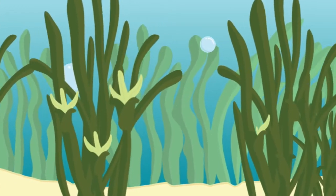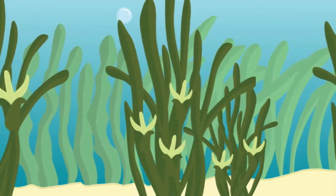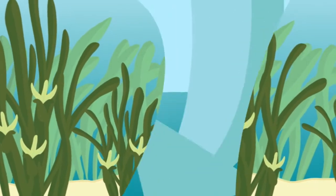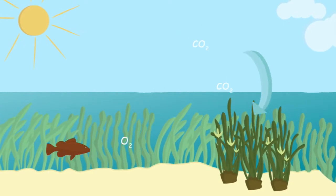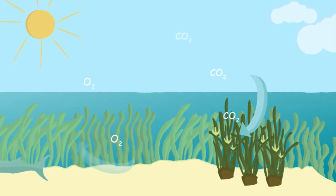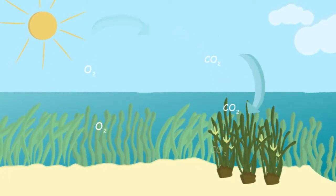Did you know that seagrasses are flowering plants? Just like grass on land, they have leaves that photosynthesize, roots that absorb nutrients, and flowers and seeds that disperse in the water to reproduce, just like trees on land.